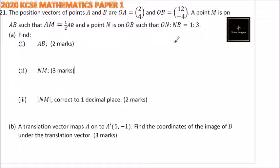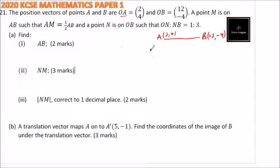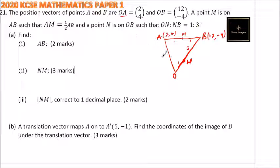The best thing here is first of all to make a sketch of this. We can say this is our point A and this is our point B. Since we have been given the position vectors, the coordinates of A are (2, 4) and B is (12, -4). We have the origin O, and we have our point M. Then we have our N, which is at (1, 3). So that is the information represented on the diagram.